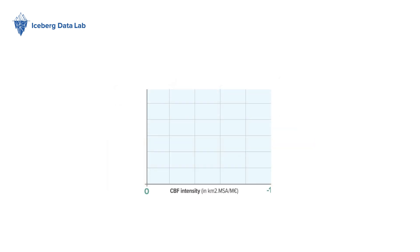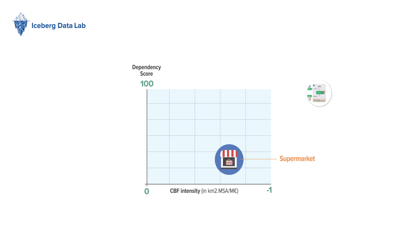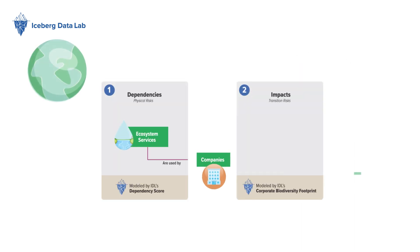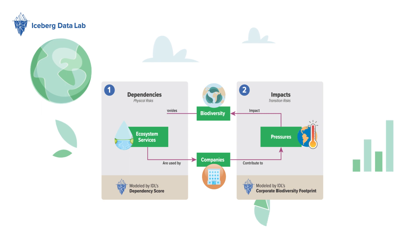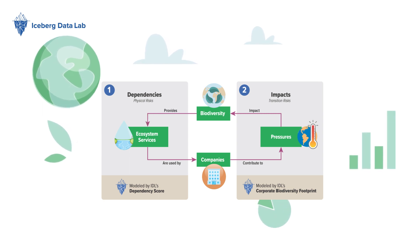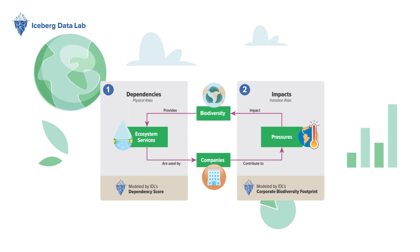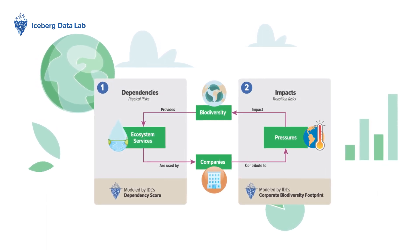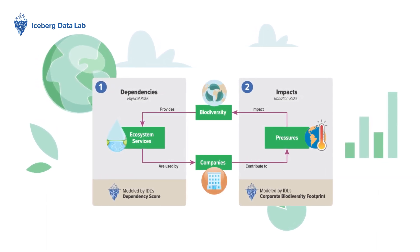When looking at the double materiality analysis of this food supermarket, we can conclude that while it is not significantly directly dependent on biodiversity, its overall impact on biodiversity is high. Measuring the company's impact on biodiversity and dependency together is relevant, and both metrics answer different questions. Thanks to the CBF and our dependency scores, financial institutions are sure to have all the tools to drive their investments towards the most sustainable issuers.